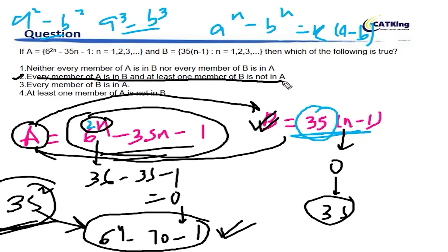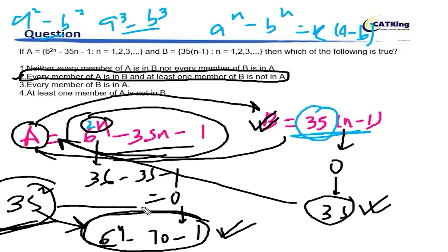So what's the answer? The answer is option 2 - every member of A is in B and at least one member of B is not in A. For example, take 35. Is 35 there in A? The answer is no. Will 35 square come here later on? Yes. So that's how this question goes.